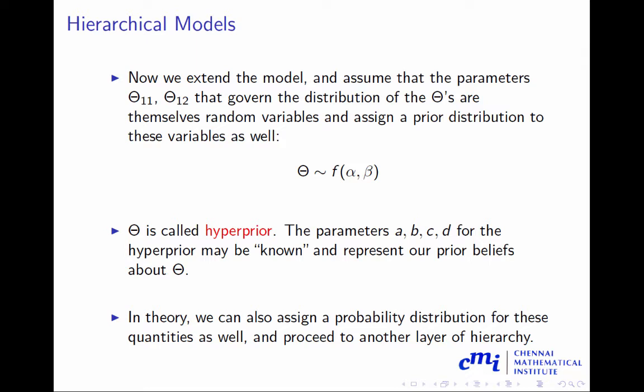We extend the model and assume the parameters theta_1 to theta_n are governed by a distribution. This bigger distribution has another distribution called f(alpha, beta), and this is called a hyper-prior. So distribution over distribution. You have a prior distribution; now this prior distribution is coming from another distribution, which we call the hyper-prior distribution.